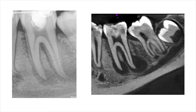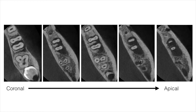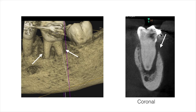A sagittal view of the CBCT scan demonstrated two large periapical radiolucencies around the mesial and distal roots, with the distal area extending right up into the furcation. This slide shows different slices of the CBCT scan through the axial plane, emphasizing the extent of the periapical pathology. A 3D reconstructed view and a coronal view also clearly illustrated the loss of the buccal bone plate, exposing the coronal two-thirds of the mesial and distal roots.